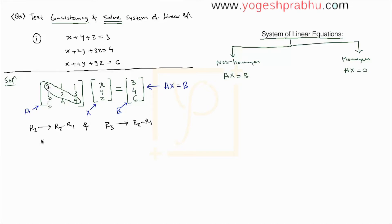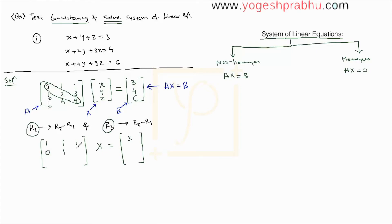Let us rewrite the matrices with X on the side. The first row remains unchanged: 1, 1, 1 with right hand side 3. Performing R2 minus R1: 1 minus 1 = 0, 2 minus 1 = 1, 3 minus 1 = 2, and on the b matrix 4 minus 3 = 1. Performing R3 minus R1: 1 minus 1 = 0, 4 minus 1 = 3, 9 minus 1 = 8, and on b: 6 minus 3 = 3. The first two zeros are achieved.